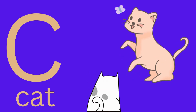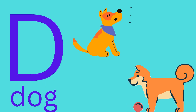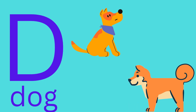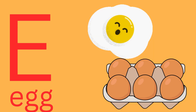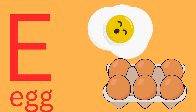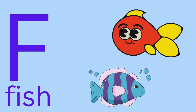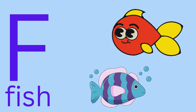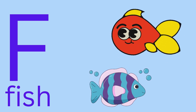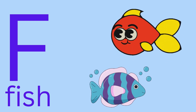D is for dog. Dog. E is for egg. Egg. F is for fish. Fish.